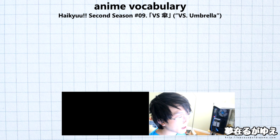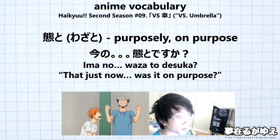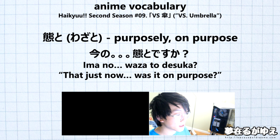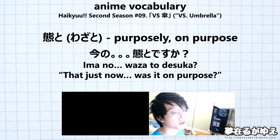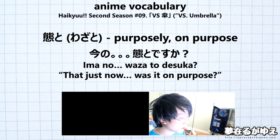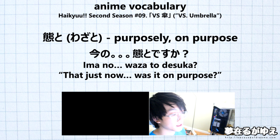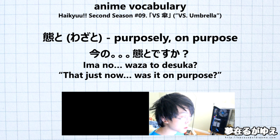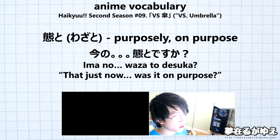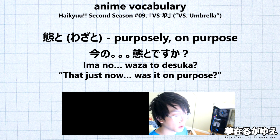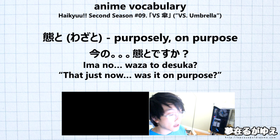For our next vocabulary term we have the word wazato, and this is going to translate to 'purposely' or 'on purpose.' Our example sentence is 'ima no wazato desu ka,' which is pretty casual. It translates to 'that just now — was it on purpose?' Breaking it down: ima means 'now'; the particle no invokes noun modification, with part of the phrase implied by context, so 'ima no blank' loosely means 'that just now'; then wazato means 'on purpose'; and desu plus the sentence-ending particle ka makes it a question. So: 'that just now, was it on purpose?'